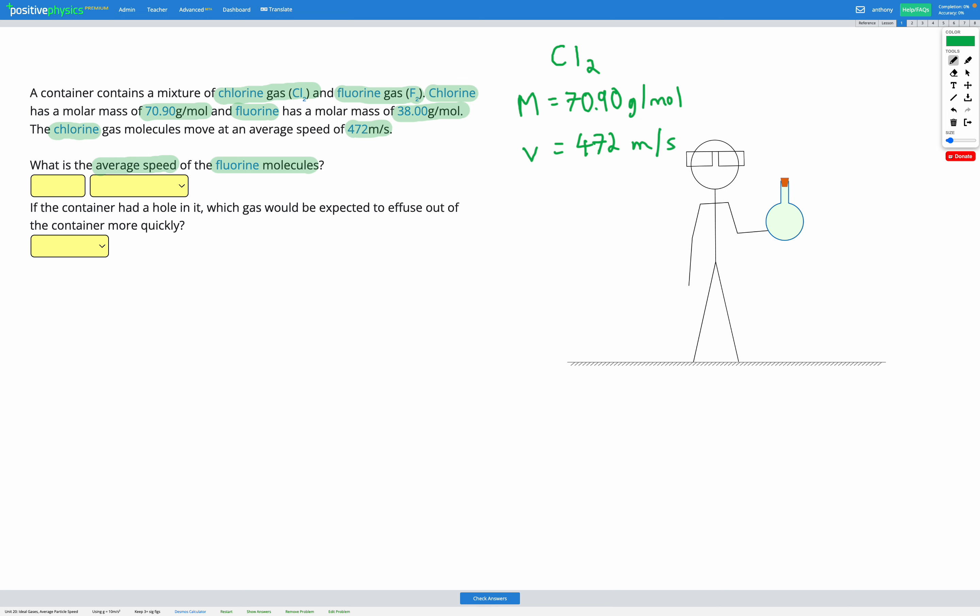For fluorine F2, we know the molar mass is 38.00 grams per mole. The speed is what we're trying to find.